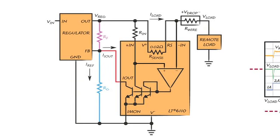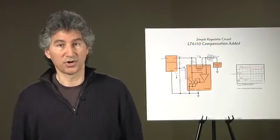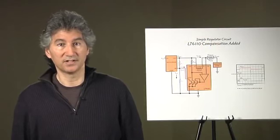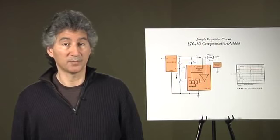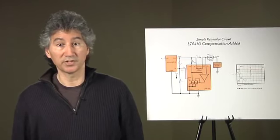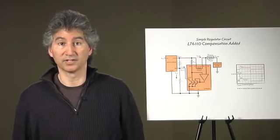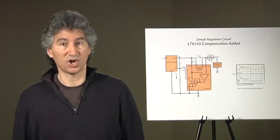For higher load currents and better accuracy, an external sensor resistor can be used by leaving the RS pin open. Additional IR drops due to printed circuit traces, connectors, or the load regulation of the regulator itself can be compensated for. This makes possible the use of narrower PC traces and thinner wires while still maintaining good regulation at the load, saving board space and cost.